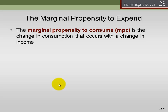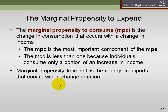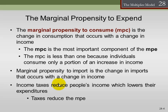Marginal propensity to consume is an important component of the marginal propensity to expend. The marginal propensity to consume is the additional consumption that occurs when we have a change in income. It's one of the largest components of MPE because consumption is one of the largest components of total expenditure. Marginal propensity to consume is less than 1 because individuals only consume part of their income, and greater than 0 because they will consume some of it. Additionally, the marginal propensity to import is the change in imports that occurs with a change in income. Income taxes reduce people's income, which lowers their expenditure, so taxes reduce the marginal propensity to expend — we need to account for taxes as a limiting factor within our model.